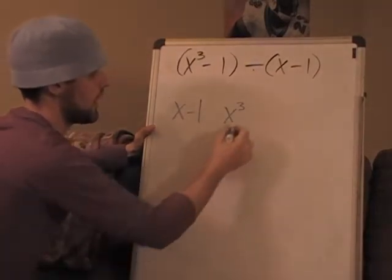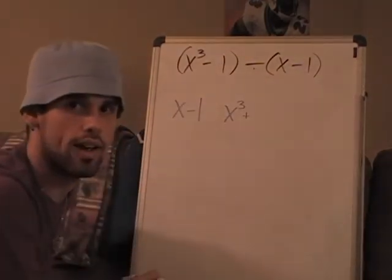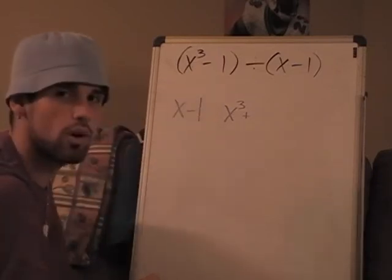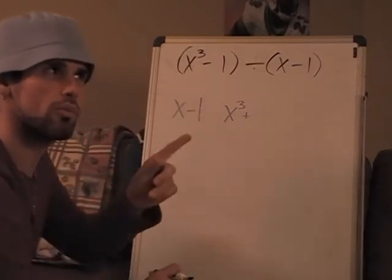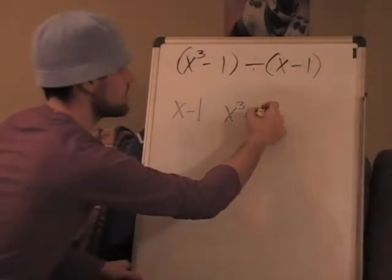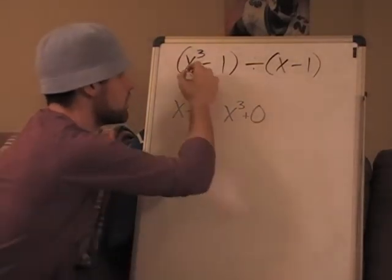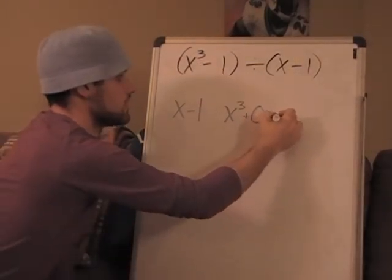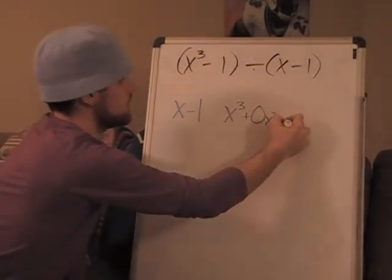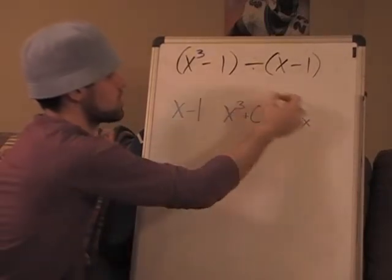How many x² do I have? Well, if they didn't write any, what must the coefficient have been? It must have been zero. So we're going to put zero in for a placeholder - zero x² in case we have to subtract from that, and we will. Then we also need zero x, and then we have that negative one at the end.